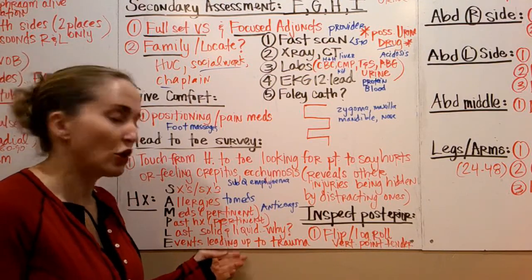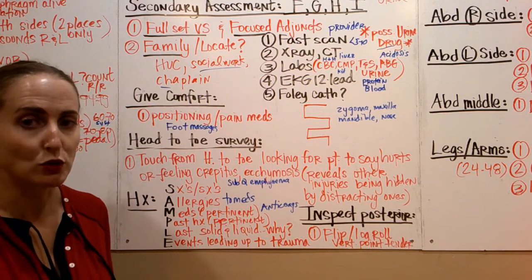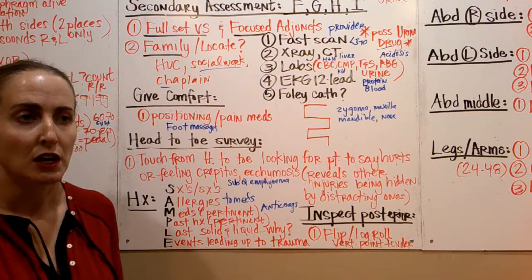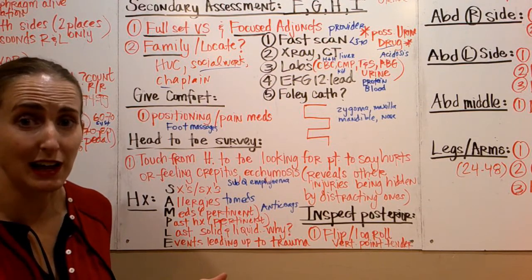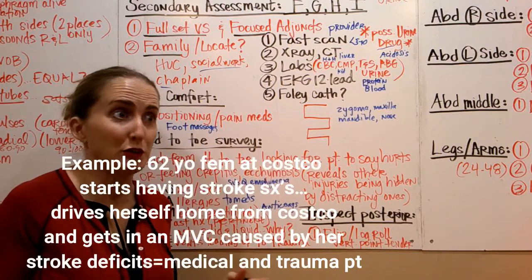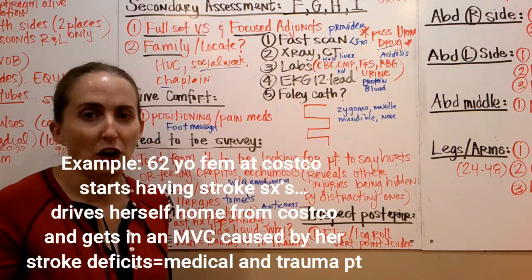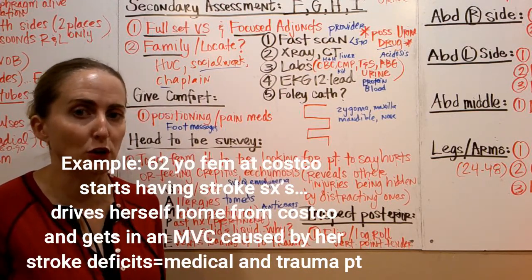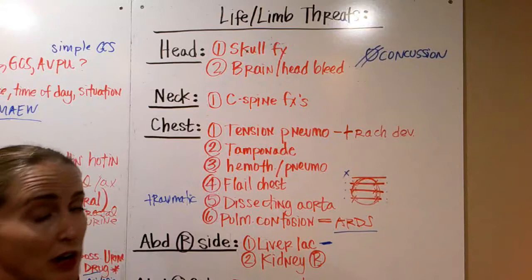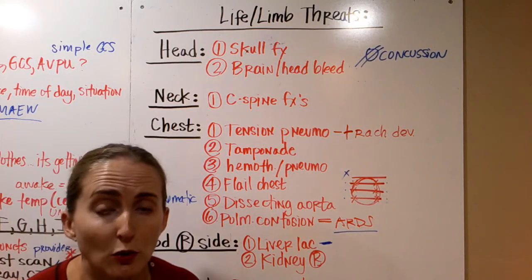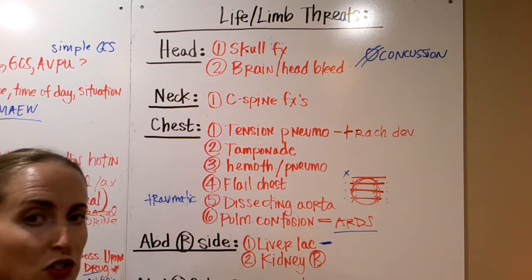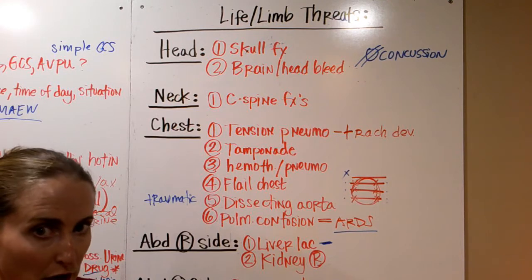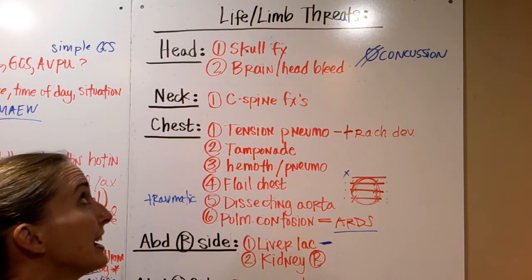We need to rule out any medical causes of the accident — like a stroke patient who has stroke symptoms while driving and then gets in a car accident. You're treating traumatic injuries and also trying to fix the medical cause. These are the life or limb threats we're trying to rule out with our primary and secondary assessments, differentiated by body area. In the head: skull fractures and brain bleeds are the two life or limb threats.